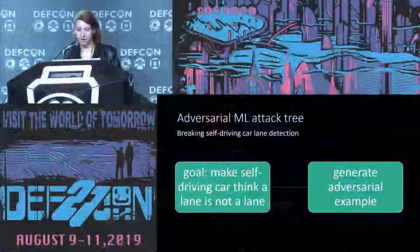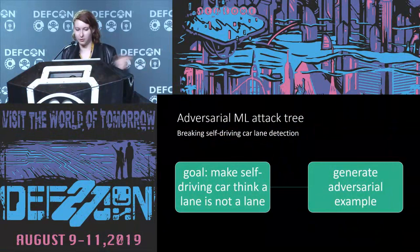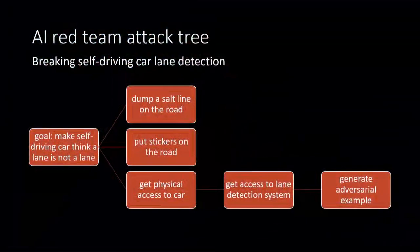Here's the adversarial ML attack tree for breaking self-driving car lane detection. The goal is to make a self-driving car think that a lane isn't a lane — in the adversarial ML case, you would just generate an adversarial example. But if we want to actually operationalize this, we have a couple of other options: we could dump a salt line on the road, or put stickers on the road. The Tencent Security Lab paper from March ended up putting stickers on the road that's very similar to what I did with salt, so it's not just me — it's a problem. A third option is to get physical access to the car, then get access to the lane detection system, and then generate your adversarial example — but that's so much harder. We need to remember that we're AI security researchers looking to exploit AI systems, not here to write machine learning research papers about the math necessary to do a particular type of algorithmic attack.